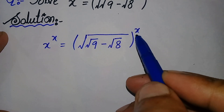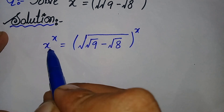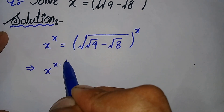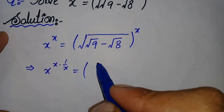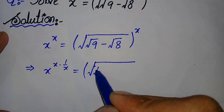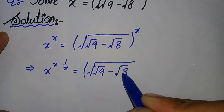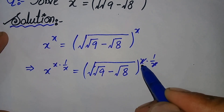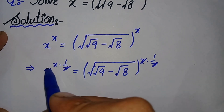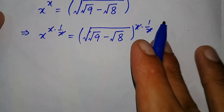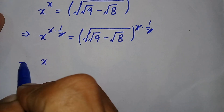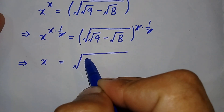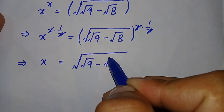To solve this question further, first of all we will try to eliminate x from the right hand side. To eliminate this x, we will multiply 1 over x in the power of both numbers. It becomes x raised to power x times 1 over x, equals the expression raised to power x times 1 over x. On both sides the x values cancel, leaving just x on the left and square root of square root of 9 minus square root of 8 on the right.